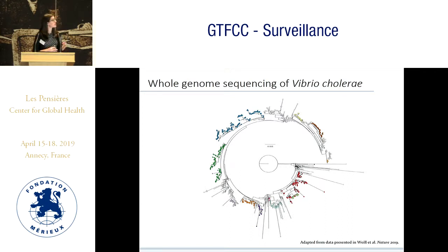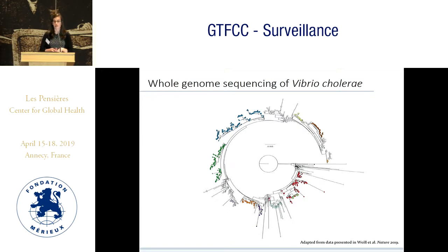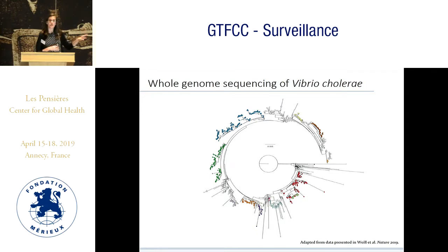I think some of these open questions are — this is a really broad global picture of what cholera looks like, but there are still questions about what local and regional transmission look like. There are still questions that have to do with antibiotic resistance, and also trying to reconcile some of these data with the epidemiological data to understand more about the dynamics of cholera in specific regions.